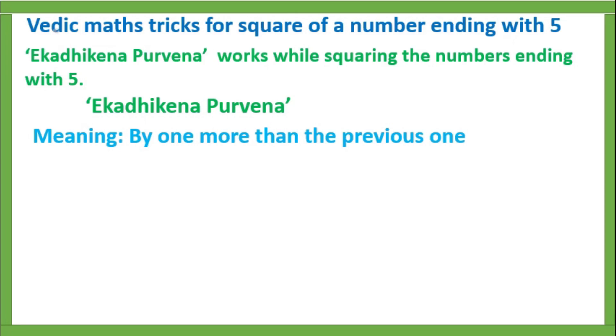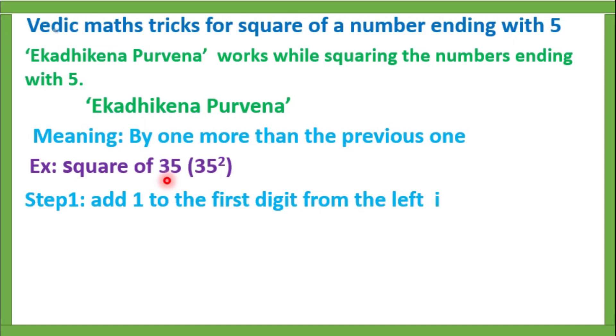Let us understand this with an example. Square of 35. Step 1: Add 1 to the first digit from the left and multiply by the number itself. Add 1 to 3 to get 4 and multiply this with 3, that is 3 into 4 equals 12. Step 2: Take the square of the ending number 5. So 5 square equals 25.